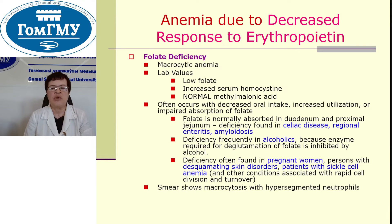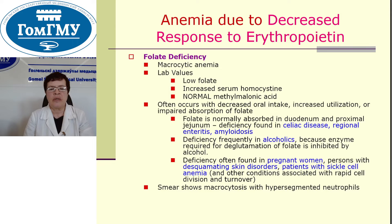Folate is normally absorbed in the duodenum and proximal jejunum. Deficiency is found in celiac disease, regional enteritis, and amyloidosis. Deficiency is frequently found in alcoholics because the enzyme required for deglutamation of folate is inhibited by alcohol. Deficiency is often found in pregnant women, persons with desquamating skin diseases, and patients with sickle cell anemia and other conditions associated with rapid cell division and turnover.